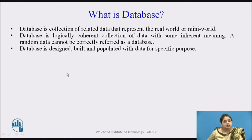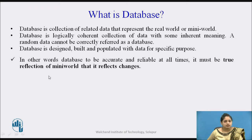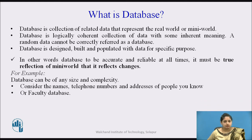What is a database? A database is a collection of related data that represents the real world or mini world. It is a logically coherent collection of data with some inherent meaning. Random data cannot be correctly referred to as a database. A database is built and populated with data for specific purposes — it should be accurate and reliable, reflecting the mini world or real world. For example, recorded data of a person with name, telephone number, and address is a database. A university faculty database records all faculty information, including resignations, marriages, and dependents. So a database is a reflection of the real world.